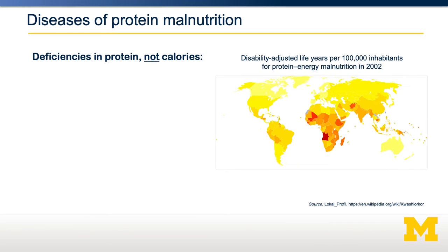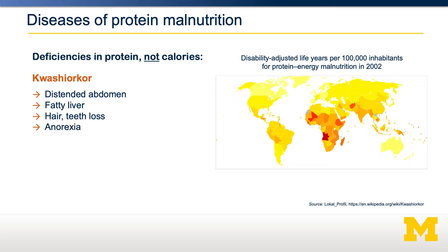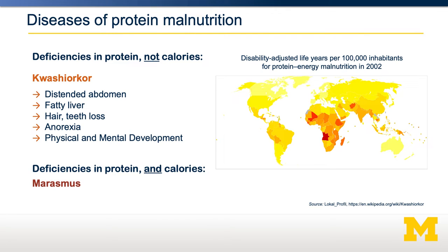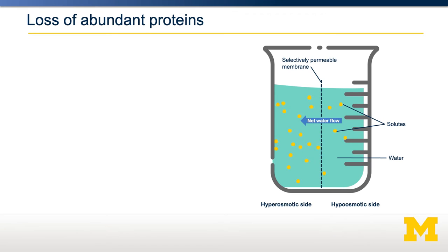There are two major diseases of protein malnutrition. Kwashiorkor is when you have a deficiency of protein but not necessarily a deficiency in calories. This is rare in Western societies but quite common in Sub-Saharan Africa. Some of the phenotypes include a distended abdomen, fatty liver, hair and teeth loss, anorexia, and developmental difficulties. This is distinct from marasmus, which is a deficiency in both protein and calories. These phenotypes are related to the loss of those four abundant proteins.